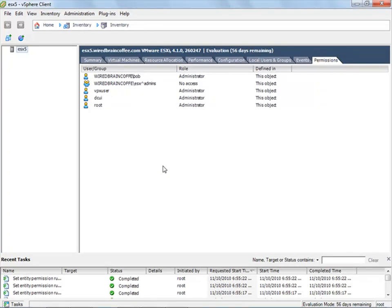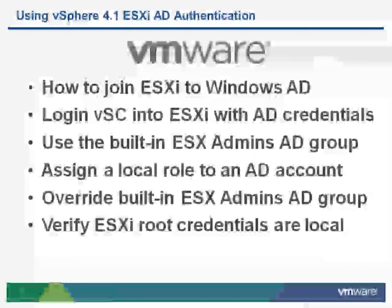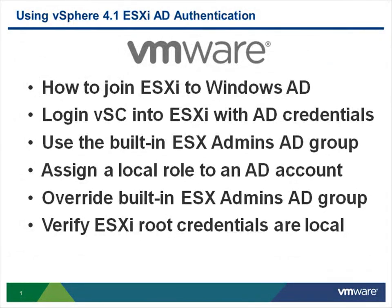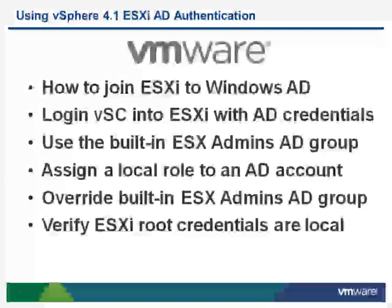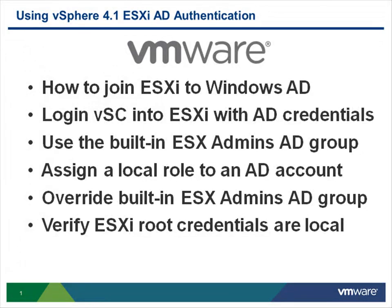So what did we learn in this video? I showed you how to join an ESXi server to a Windows Active Directory domain — it's super easy. You just go into the configuration tab, go to directory services, and add the computer just like you would any standalone Windows PC. We verified that worked by logging in with Windows Active Directory credentials. I showed you how to manipulate the built-in ESX admins group as well as how to add a local role to an Active Directory account or group.